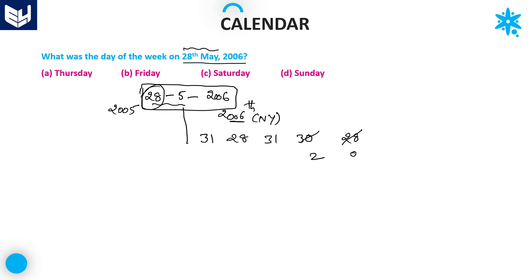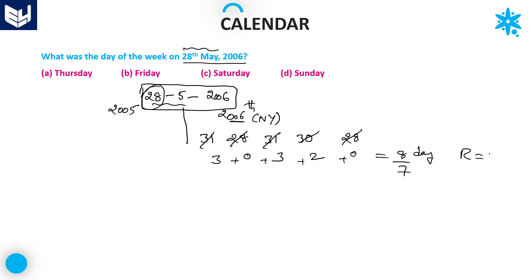For the months: April gives 2 odd days, March gives 3 odd days, February gives 0 (exactly 4 weeks), and January gives 3 odd days. Total: 3 + 3 + 2 = 8. Now, 8 days is 1 week plus 1 extra day, so the remainder is 1. The right-hand side value is 1 odd day.